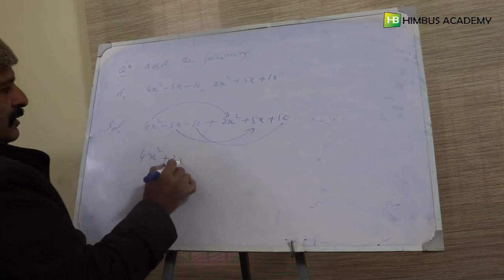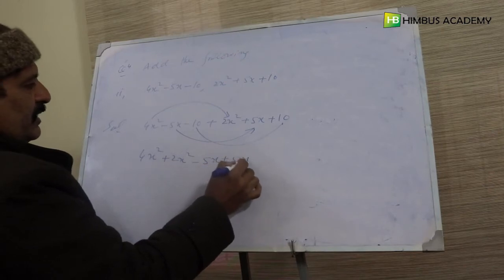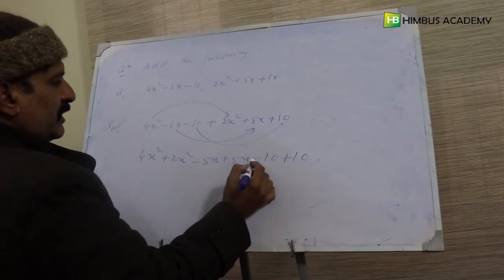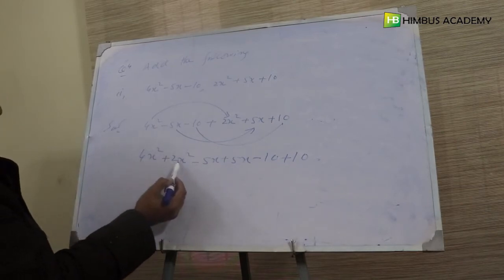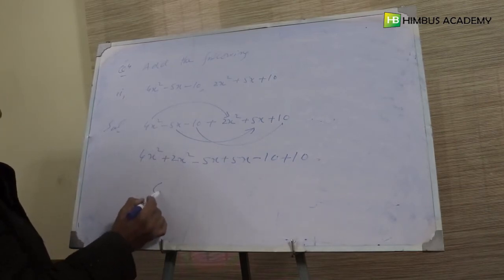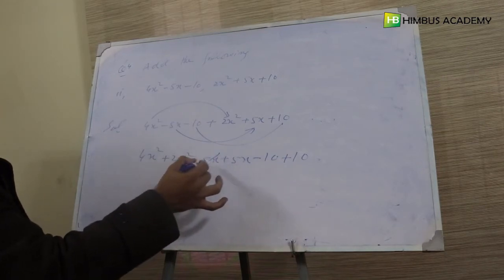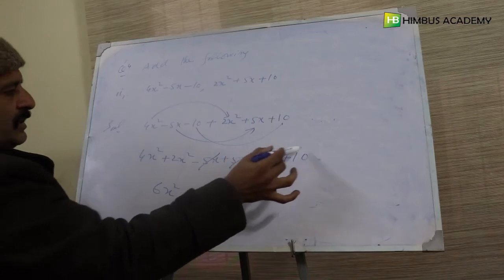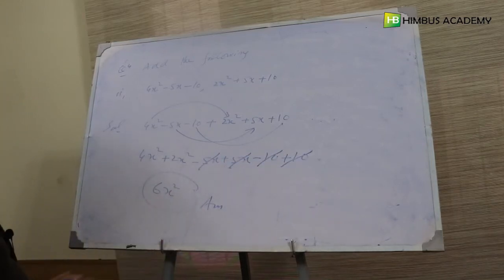Two x square ke saath minus five x aur plus five x, minus ten aur plus ten. Ab dekhen: four x square plus two x square se aata hai six x square. Minus five x plus five x cancel ho jaate hain, minus ten aur plus ten bhi cancel ho jaate hain. To six x square is ka answer hai.